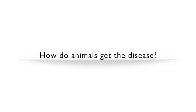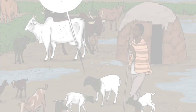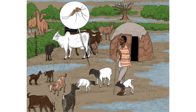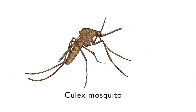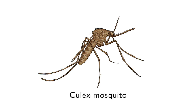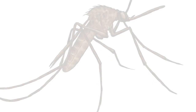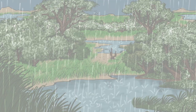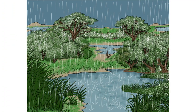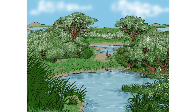How do animals get the disease? Rift Valley Fever is caused by a virus transmitted by mosquitoes. Some mosquito species such as Aedes and Culex have a higher capacity to transmit the virus than others. Following excessive and persistent heavy rainfall, flat areas get flooded, resulting in small lakes that are referred to as dambos.